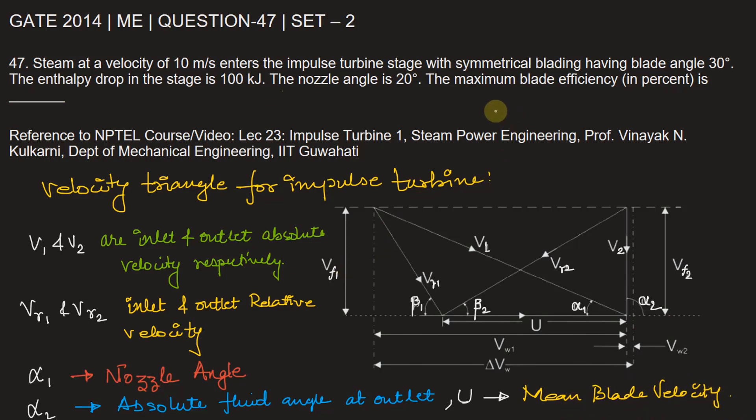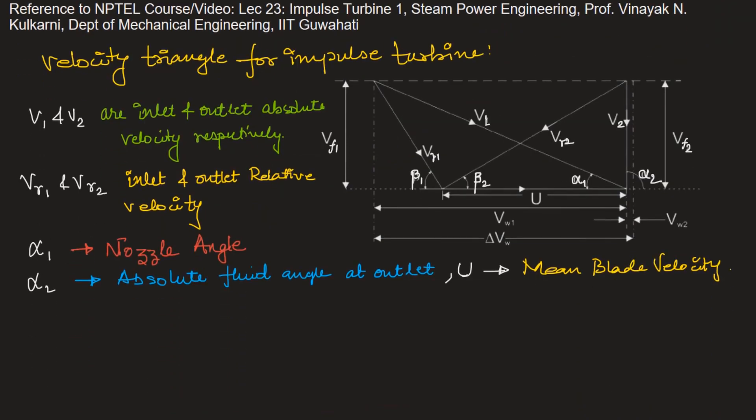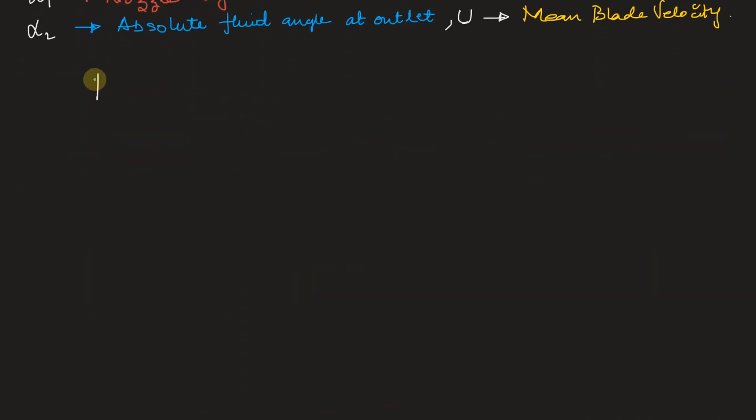In this problem, we need to find the maximum blade efficiency. So let's write the expression of blade efficiency. Blade efficiency is given by eta B which is equal to two times the mean blade velocity divided by V1, the absolute velocity at the inlet, multiplied by cos of alpha 1 minus u by V1, and this multiplied by 1 plus k times c. Where k is the friction coefficient, k equals Vr2 by Vr1.